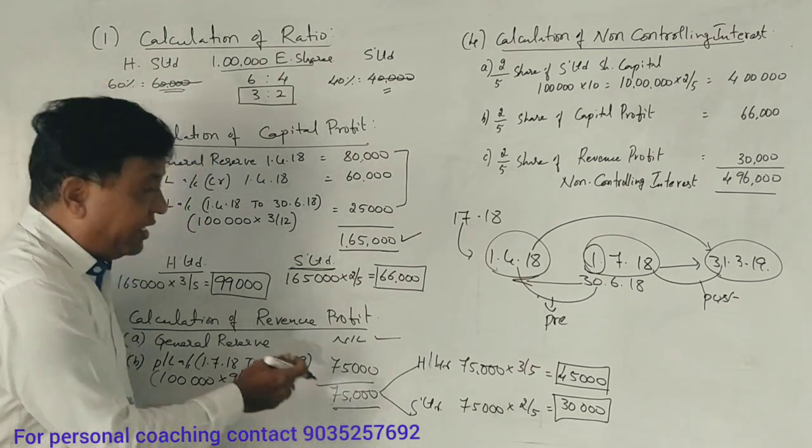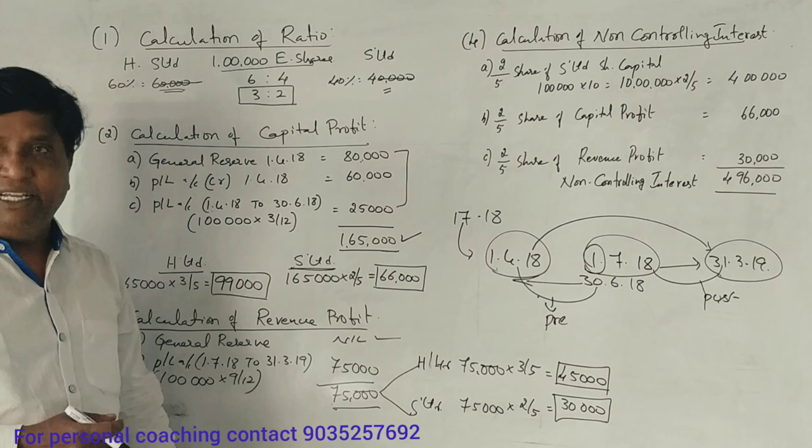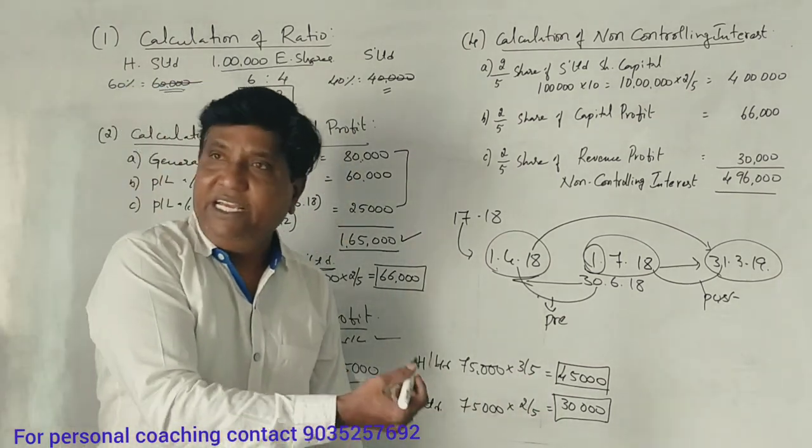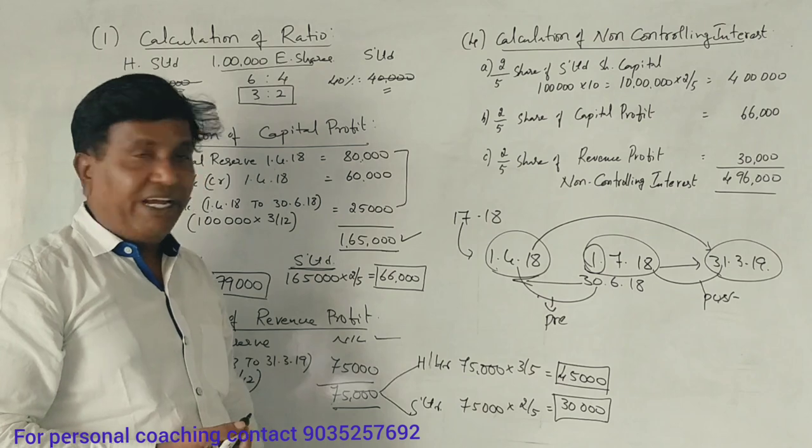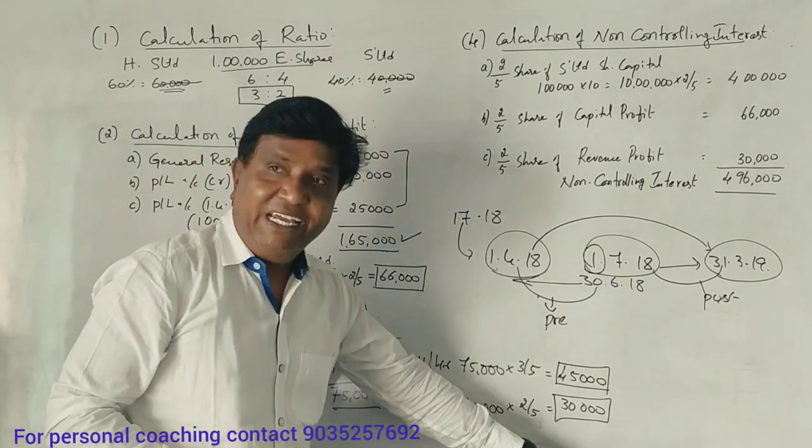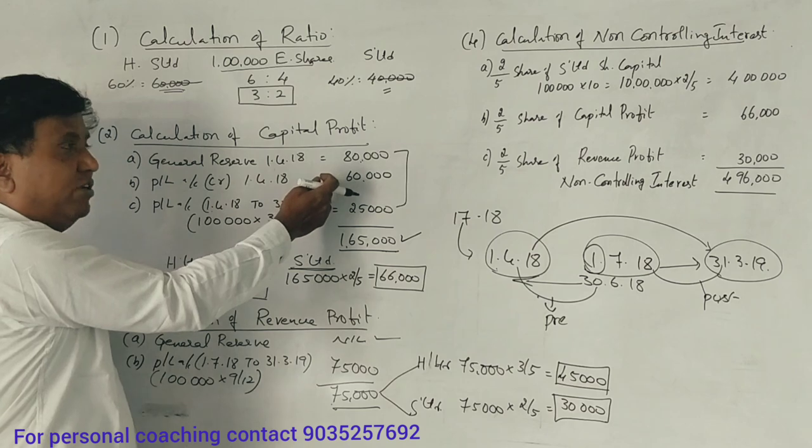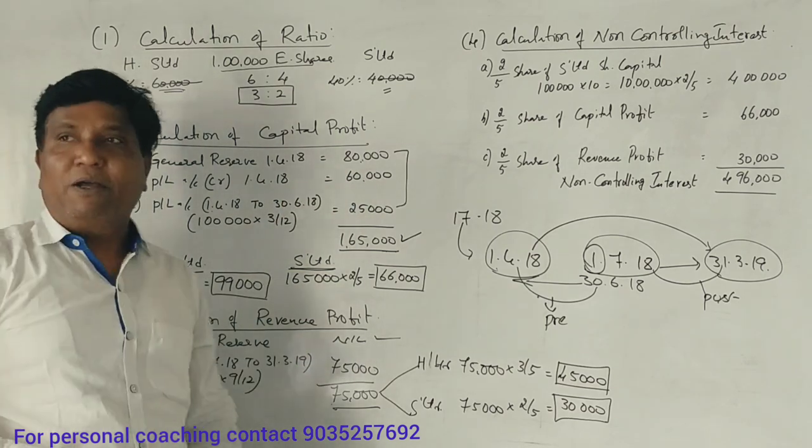75,000 revenue profit, H company 35,000. So revenue profit is there.